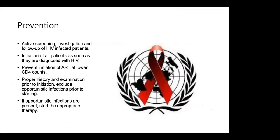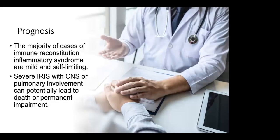Prevention of IRIS involves active screening, investigation, and follow-up of HIV-infected patients. Initiation of ART as soon as patients are diagnosed with HIV. Prevention of ART initiation at very low CD4 counts. Proper history and examination on initiation to exclude opportunistic infections prior to starting ART. If opportunistic infections are present, start the appropriate therapy first. Prognosis: the majority of cases of IRIS are mild and self-limiting. Severe IRIS with CNS or pulmonary involvement can potentially lead to death or permanent impairment.